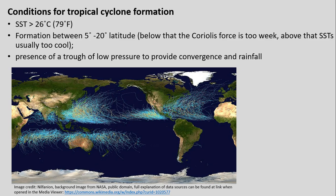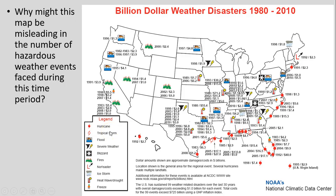Tied to the Coriolis force, we also need a presence of low pressure providing convergence to get the storm moving and picking up energy from the warm ocean waters. There's a lot more detail we could go into with tropical cyclones; this is a very brief overview. With our geography focus, we're more interested in the pattern we see across here and not delving extremely deeply into the process, but rather just looking at the spatial pattern.